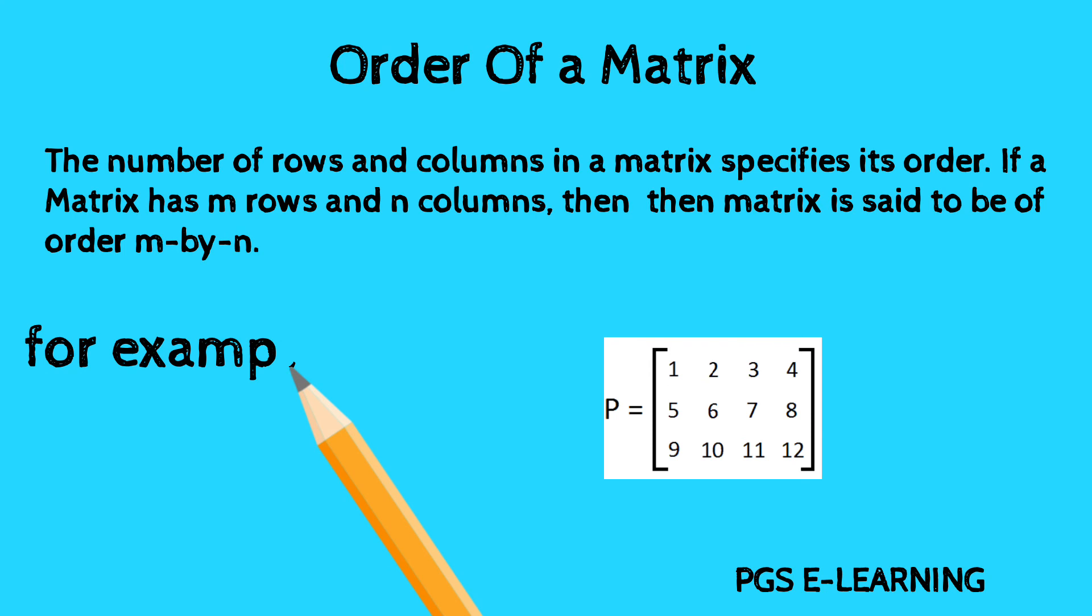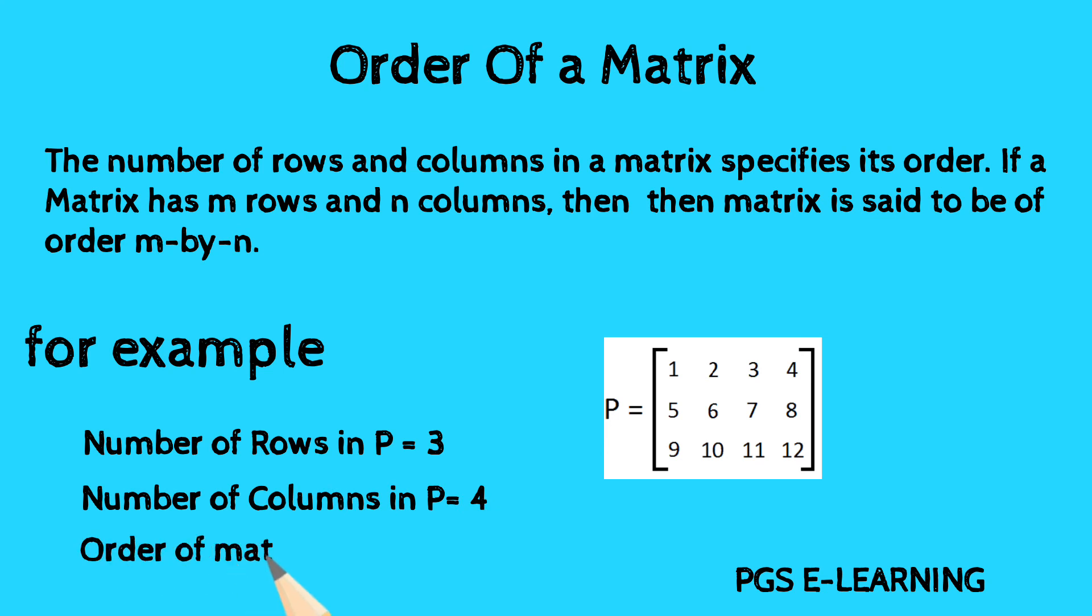Matrix P has three rows and four columns. First row is 1, 2, 3, 4. Second is 5, 6, 7, 8. Third is 9, 10, 11, 12. Similarly, its columns: 1, 5, 9; 2, 6, 10; 3, 7, 11; 4, 8, 12.